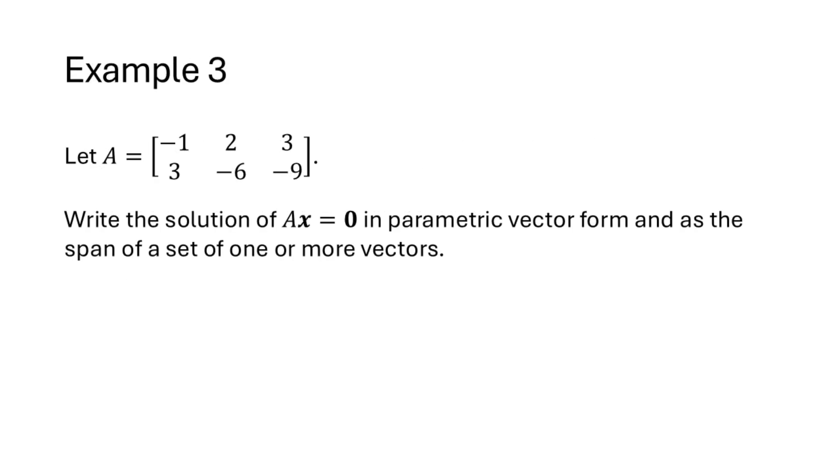Let's work through another example. So here we have the matrix A, and we want to write the solution of Ax equals 0 in parametric vector form and as the span of a set of one or more vectors. We would proceed by setting up and row reducing an augmented matrix. Now in the homogeneous case, we will sometimes leave out that last augmented column, because in the homogeneous case that last column is all zeros. And that last column is going to stay being all zeros no matter what row operations we perform. And so sometimes we'll leave it out entirely. I've left it in here, but you'll see us leaving it out in future examples.